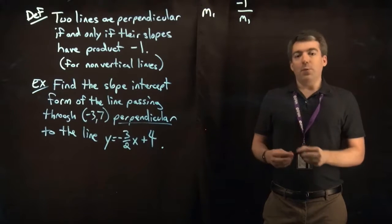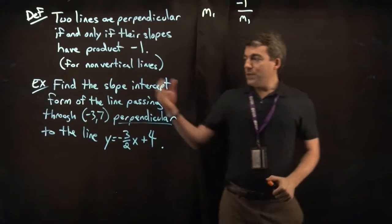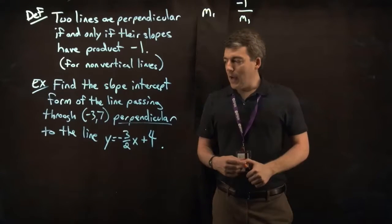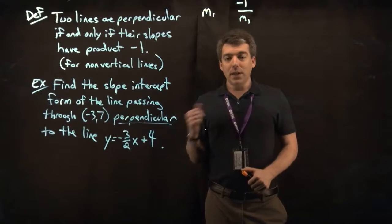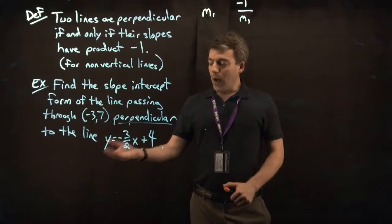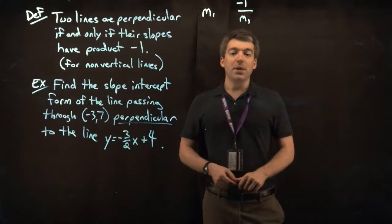All right, let's do an example with perpendicular lines. Let's find the slope-intercept form of the line passing through the point (-3, 7), perpendicular to the given line y equals negative 3 halves x plus 4.